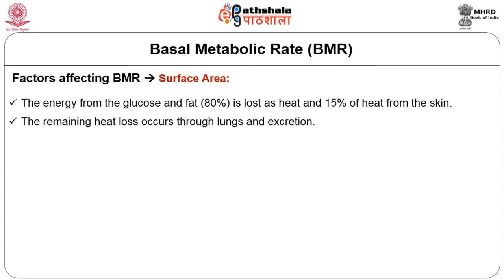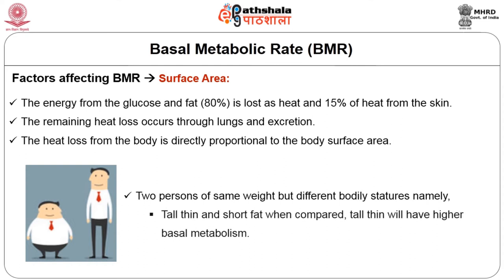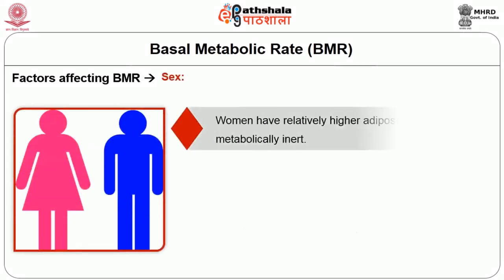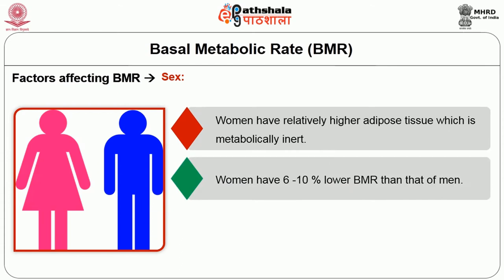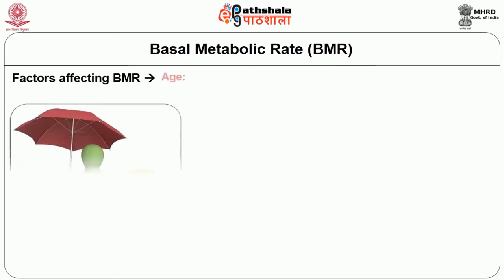Factors affecting basal metabolic rate: Surface area — about 80% of energy from glucose and fat is lost as heat, with 15% lost through skin. Heat loss from the body is directly proportional to body surface area. Between two persons of the same weight but different structures, the tall, thin person will have higher basal metabolism. Sex — women have relatively higher adipose tissue which is metabolically inert; hence women have 6–10% lower BMR than men. Sex hormones also influence BMR. Age — BMR is highest during the first 2 years from birth, gradually declines through childhood, accelerates in adolescence, then decreases at 2% per decade after 21 years, due to lessened muscle tone and reduced muscle mass.